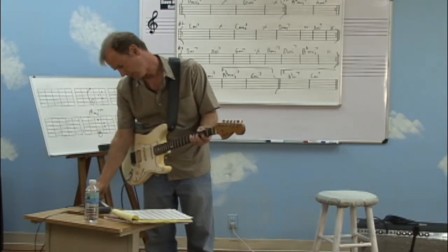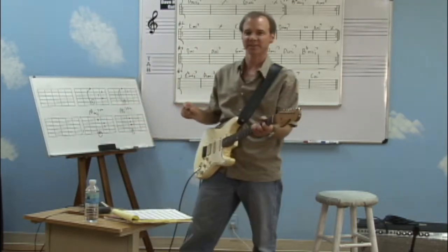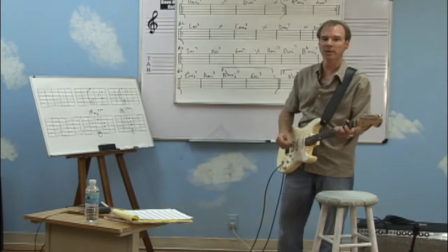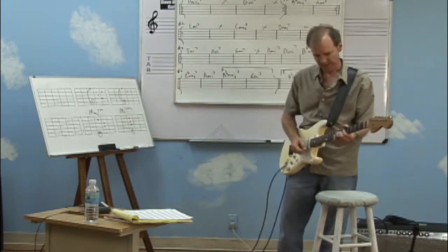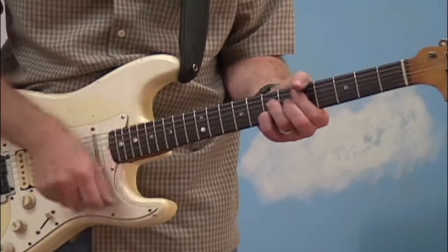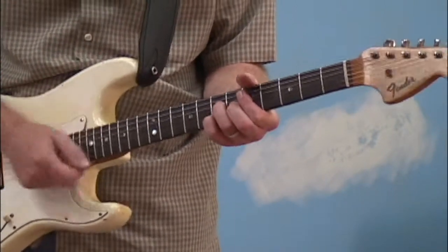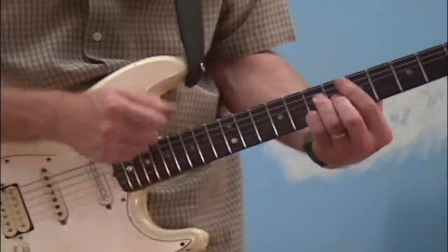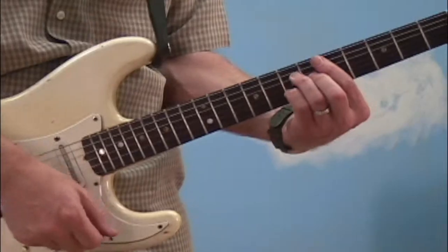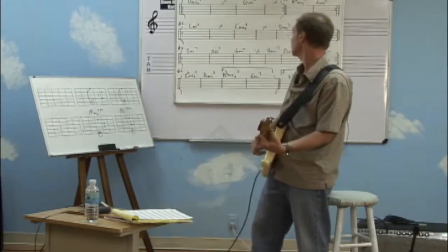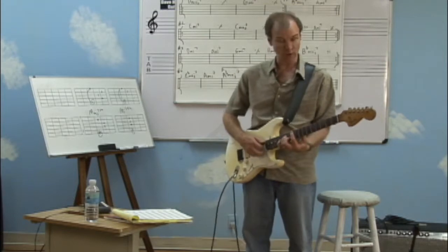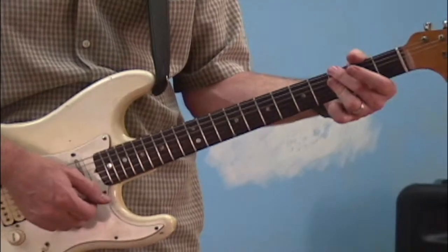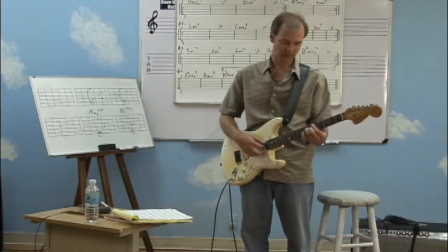You can't beat a bossa nova! In progression number one, let's do a typical bossa nova rhythm. We're going to negotiate through the different chords — we've got G minor 7th in the next bar, so we have a choice: we can go up the neck to play that, or we can go down. In this case, let's go down.